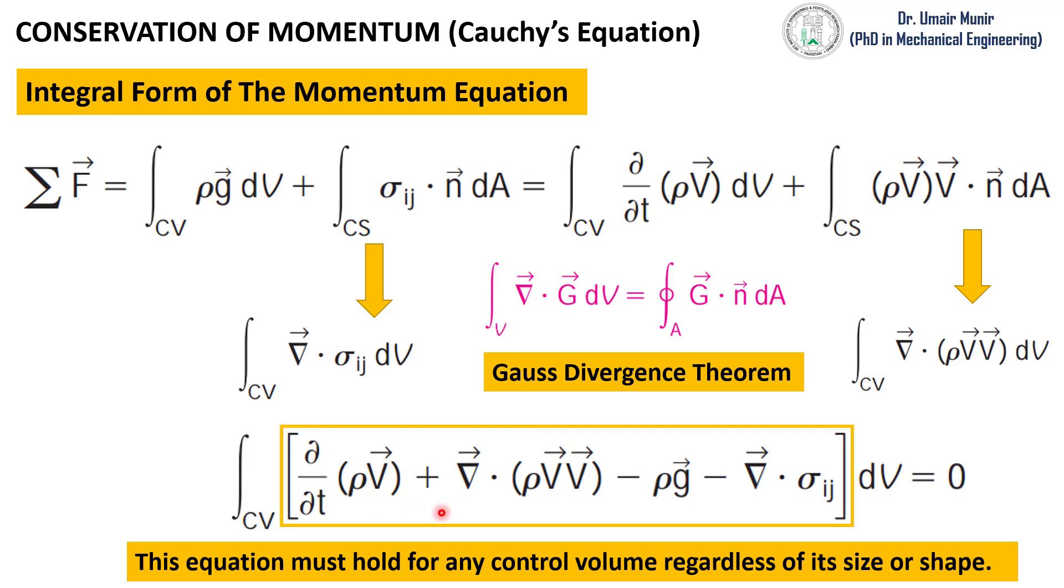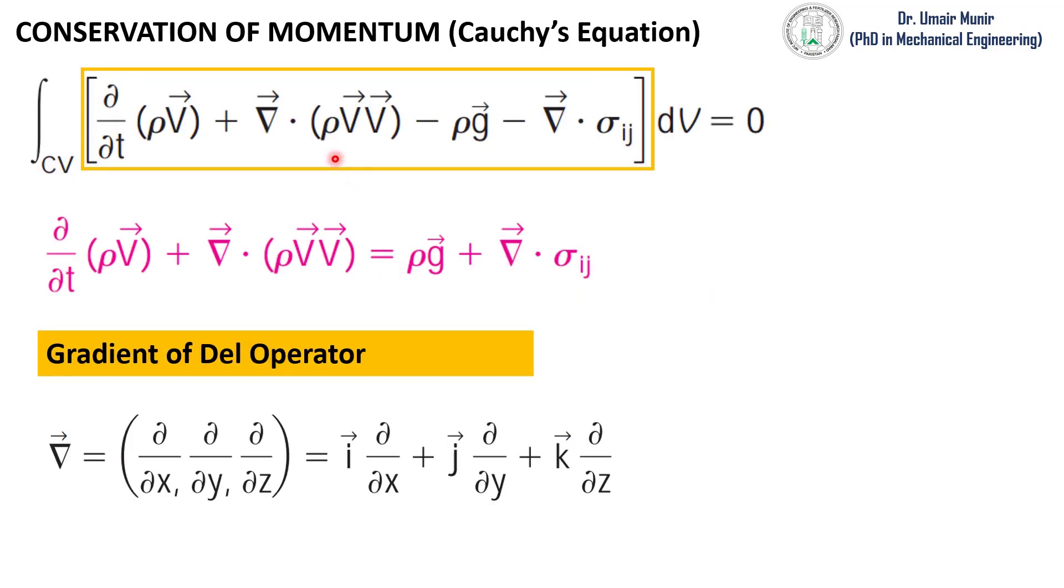This is only possible when the highlighted part of this equation is equal to zero. When we put it equal to zero and rearrange the equation, we will get the equation in this form which is the compact form of the momentum equation.